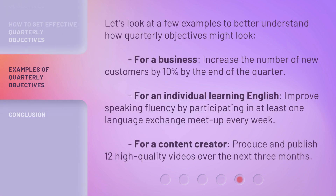Let's look at a few examples to better understand how quarterly objectives might look. For a business: increase the number of new customers by 10% by the end of the quarter. For an individual learning English: improve speaking fluency by participating in at least one language exchange meetup every week. For a content creator: produce and publish 12 high-quality videos over the next three months.